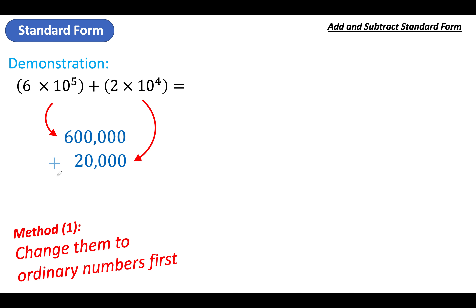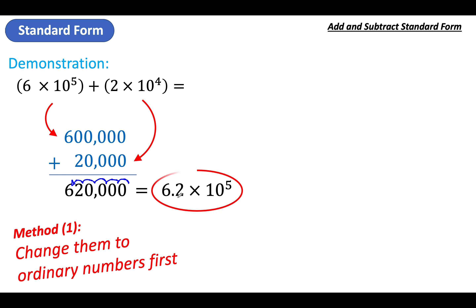I'm going to add these together because that was the question — to get 620,000. But you nearly always have to give your answer in standard form, so we'll rewrite it as 6.2 times ten to the power of five. Notice it's not just eight, and certainly not the power of nine or anything like that, because of what these numbers are when you expand them out into normal form.